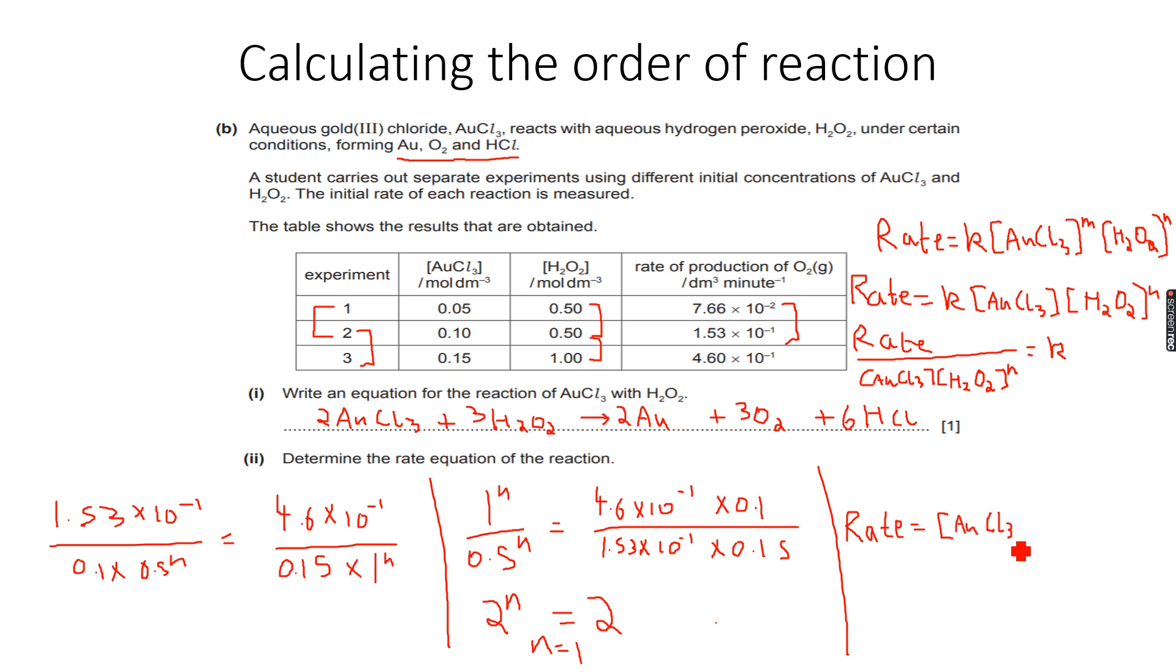So in both these cases, the reaction is first order with respect to the reactant - it is first order with respect to AuCl3 and it is first order with respect to H2O2, because both are raised to the power of 1. And the overall order is 1 plus 1, which is equal to 2. The overall order of reaction is 2.